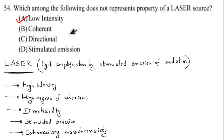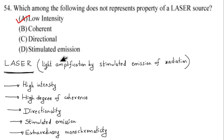The options are: low intensity, coherent, directional, and stimulated emission. Directionality is a laser property. Coherent — high degree of coherence — is also a laser property. Low intensity is NOT a property of laser because laser has high intensity. Therefore option number A, low intensity, is the correct answer. This is from the solid state physics laser chapter.